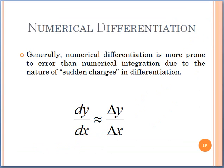Now, numerical differentiation. Generally, numerical differentiation can have more errors compared to integration, because it has a nature of sudden changes. So we approximate it by using the delta function — that is, dy/dx is approximated as Δy/Δx.